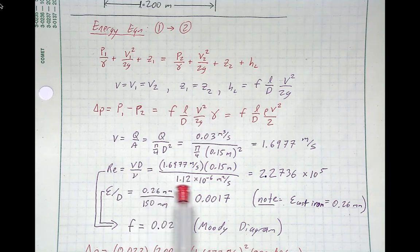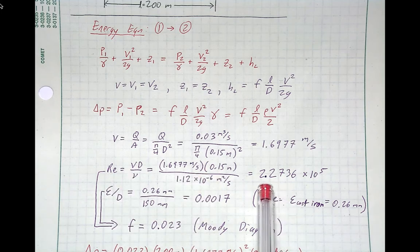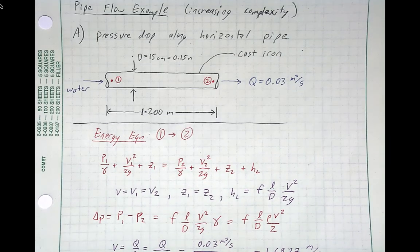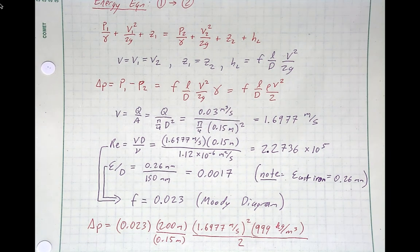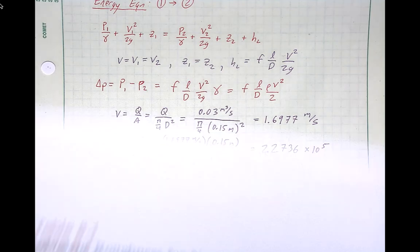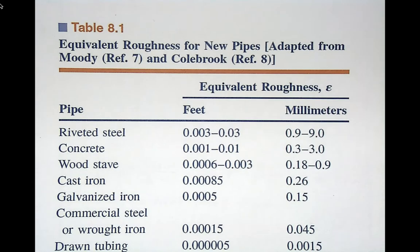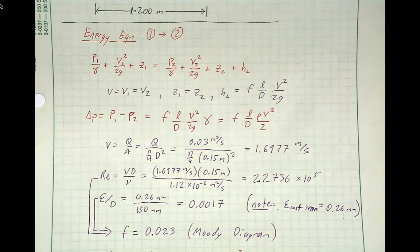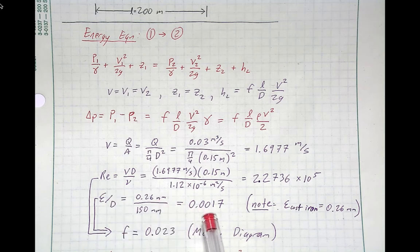We then determine the Reynolds number, since we'll need the Moody diagram. Plugging in the velocity gives a Reynolds number of 227,000, or about 2.2 times 10 to the fifth. The problem states this is a cast iron pipe. From the roughness table, cast iron has a roughness of 0.26 millimeters. Dividing by the 150 millimeter diameter gives a relative roughness of 0.0017.